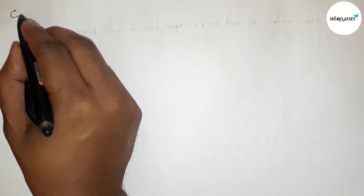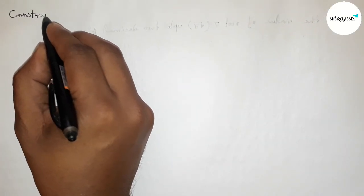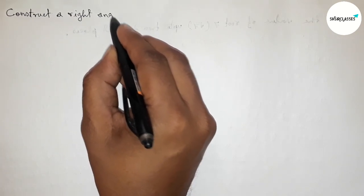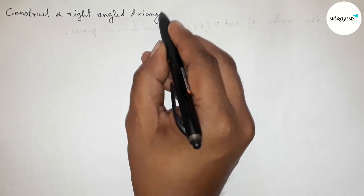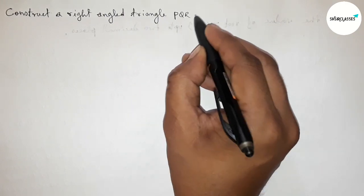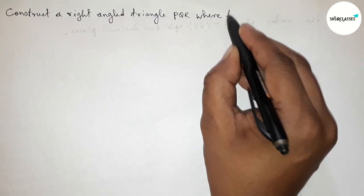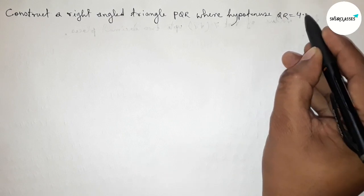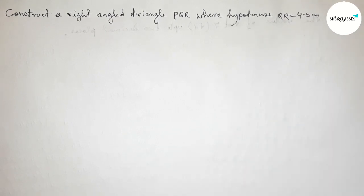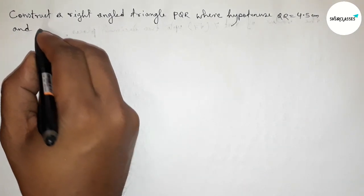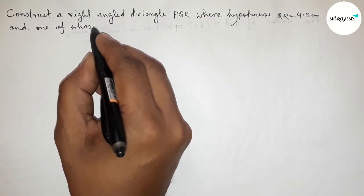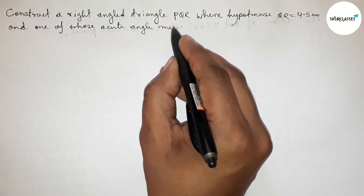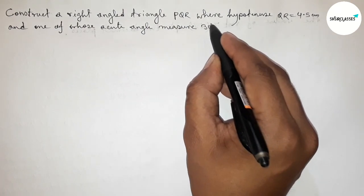Hi everyone, welcome to SI Share Classes. Today in this video we have to construct a right-angled triangle PQR where the hypotenuse QR equals 4.5 centimeters and one of whose acute angles measures 30 degrees. Please watch the video till the end. Let's start.